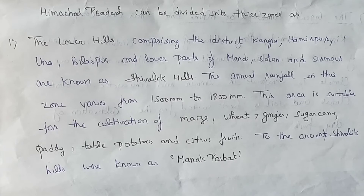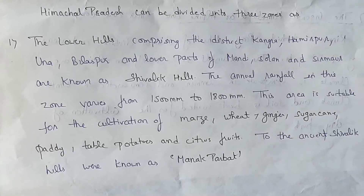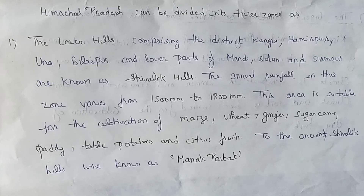The annual rainfall in this zone varies from 1500 millimetres to 1800 millimetres. This area is suitable for the cultivation of maize, wheat, ginger, sugarcane, paddy, table potatoes, and citrus fruits. In ancient times, the Shivalik Hills were known as Manak Parbat.